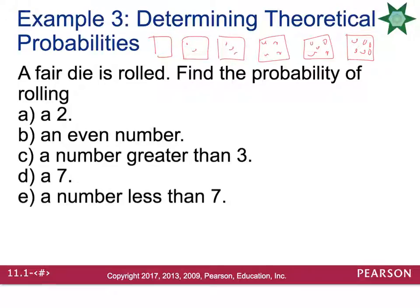So the first question says, what's the probability of rolling a two? Well, there's only one two out of six possible outcomes. So the probability would be one in six.